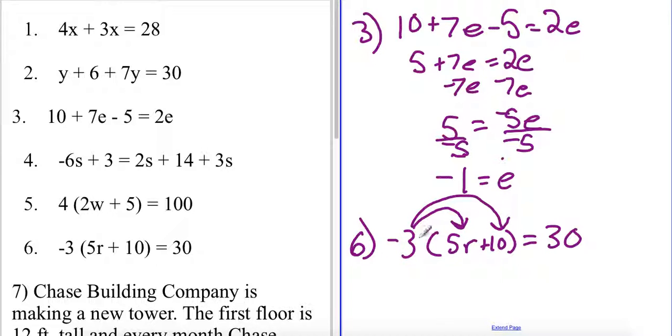So negative 3 times 5r will give me negative 15r and because I'm multiplying a negative times a positive here I'm actually going to have minus 30 equaling 30.